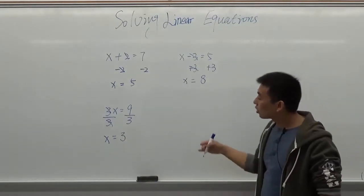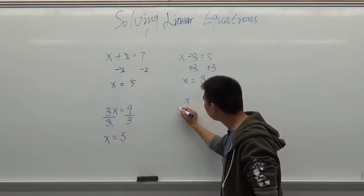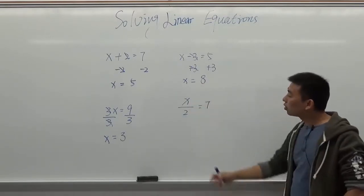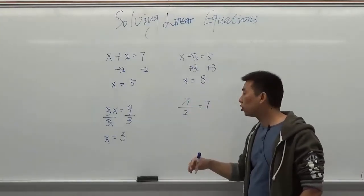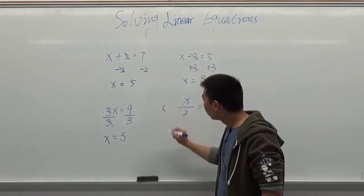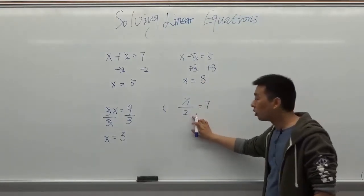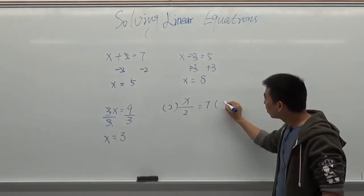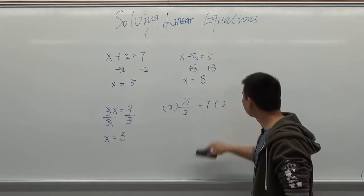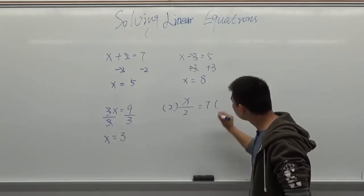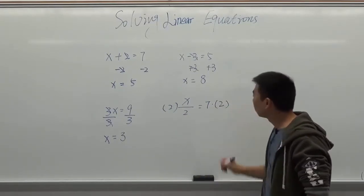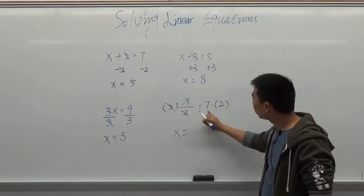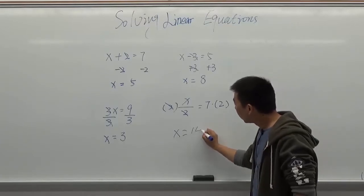And the last one is the division. x divided by 2 equals 7. Here's the division. You need to do the opposite operation. So you need to do a multiplication here. You multiply the denominator here. Here's 2. So you multiply 2 on both sides. And 2 and 2 cancel out here. So x equals 7 times 2. That gives us 14.